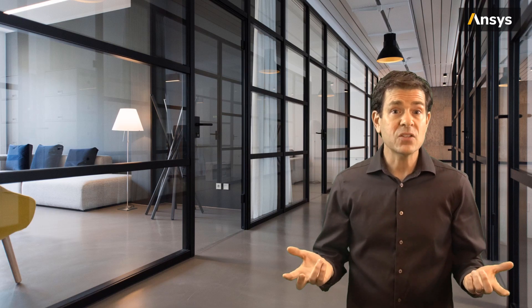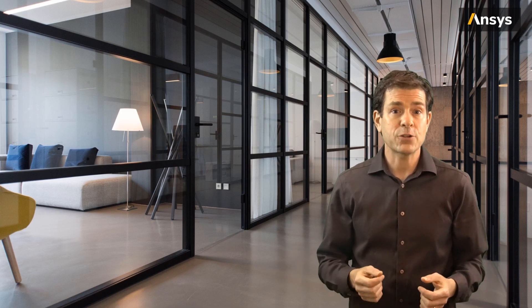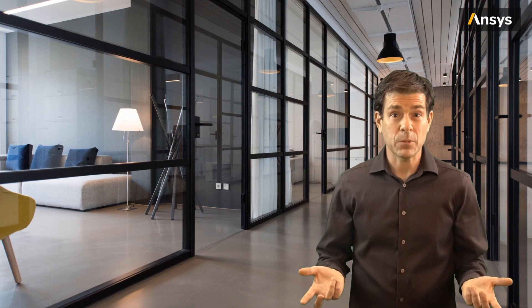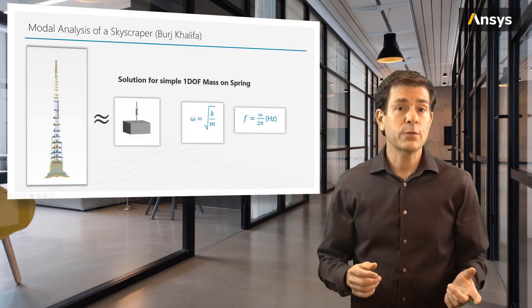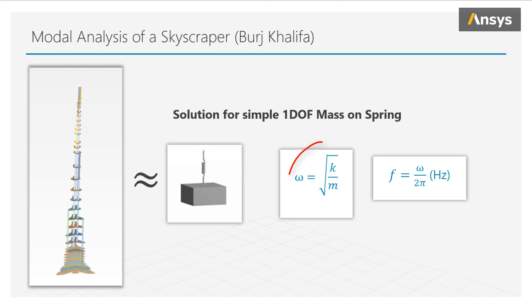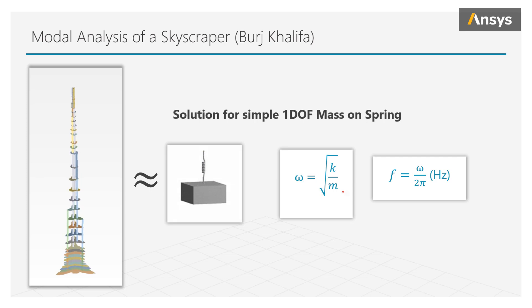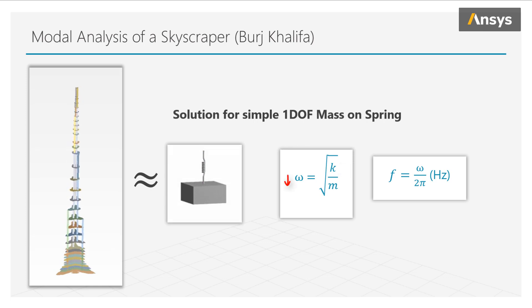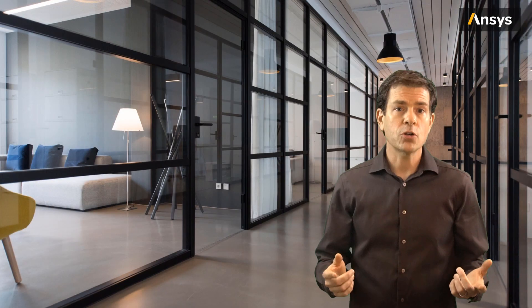Now intuitively, does it make sense that a skyscraper has such low natural frequencies, while a tuning fork has relatively much higher natural frequencies? If we think of the skyscraper in terms of a single degree of freedom system and use the simple equation omega equals square root of k over m, we know that the skyscraper has a relatively high mass compared to the tuning fork, and due to the slenderness of the skyscraper it has a relatively low lateral stiffness. This combination results in a typically low fundamental first frequency of large civil engineered structures like tall skyscrapers.